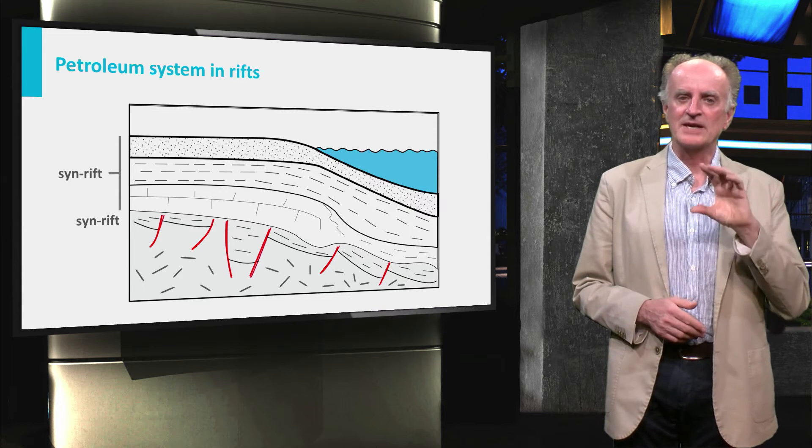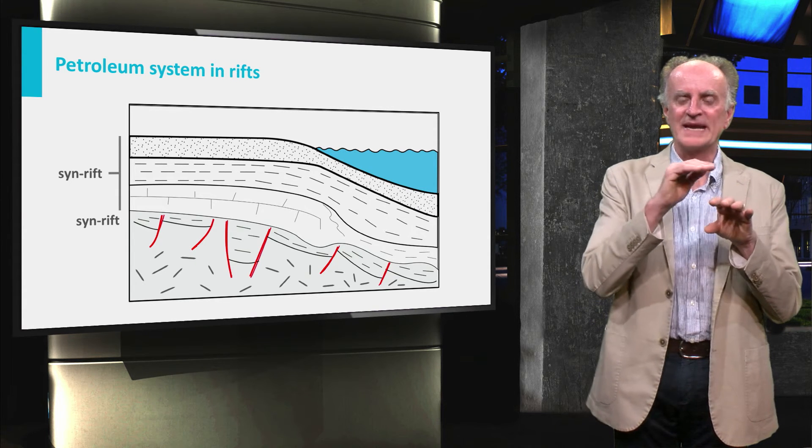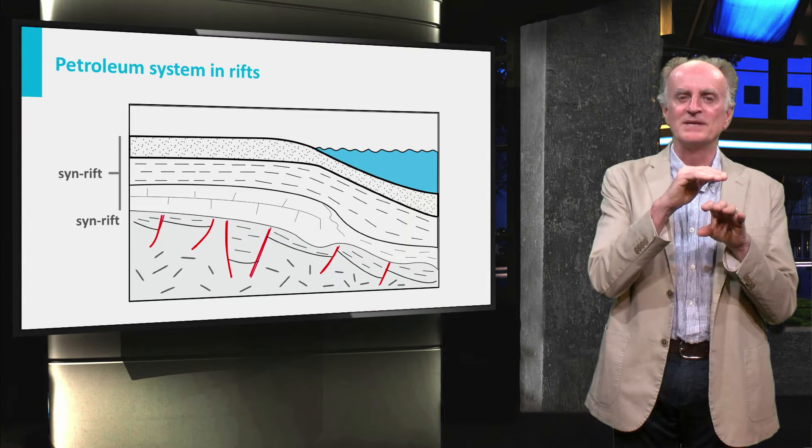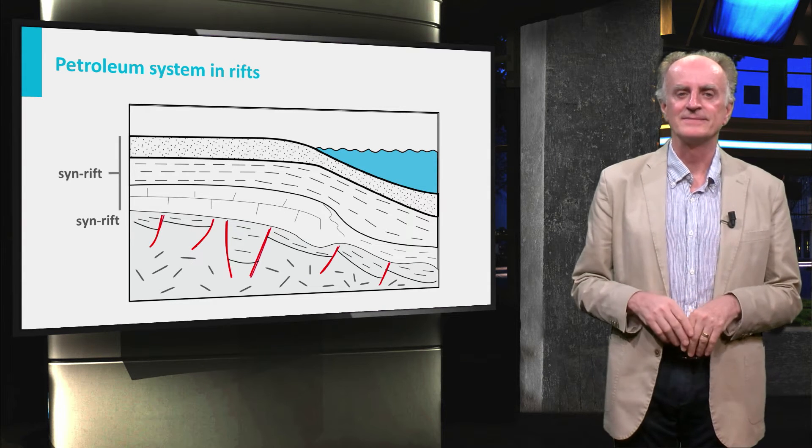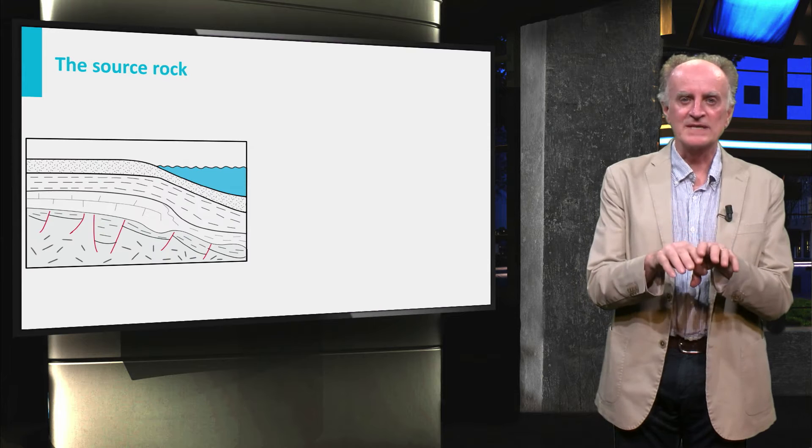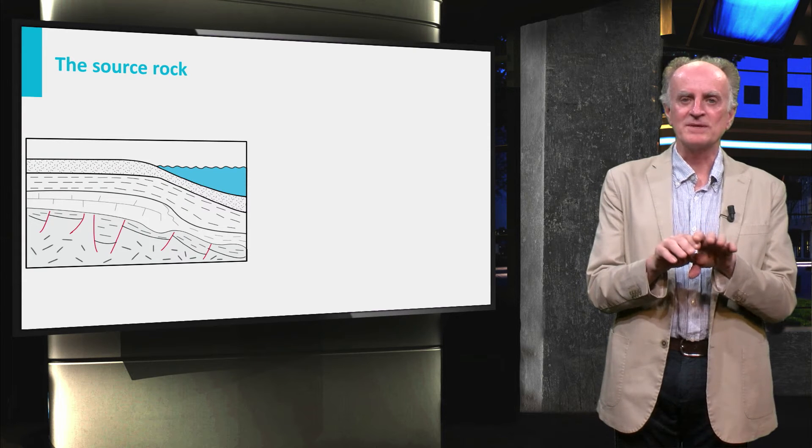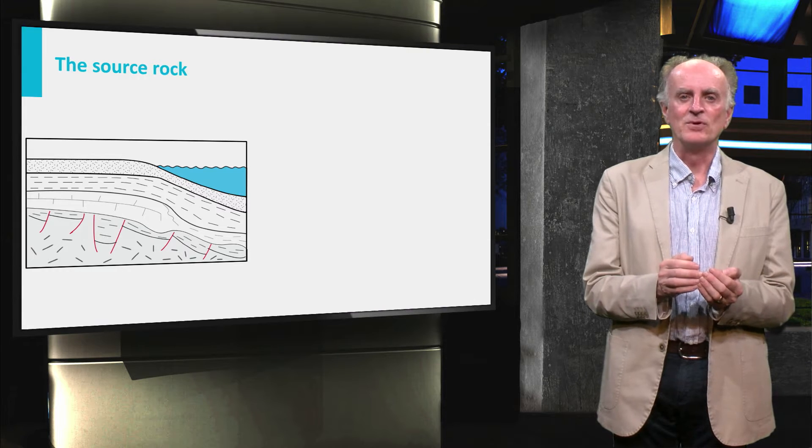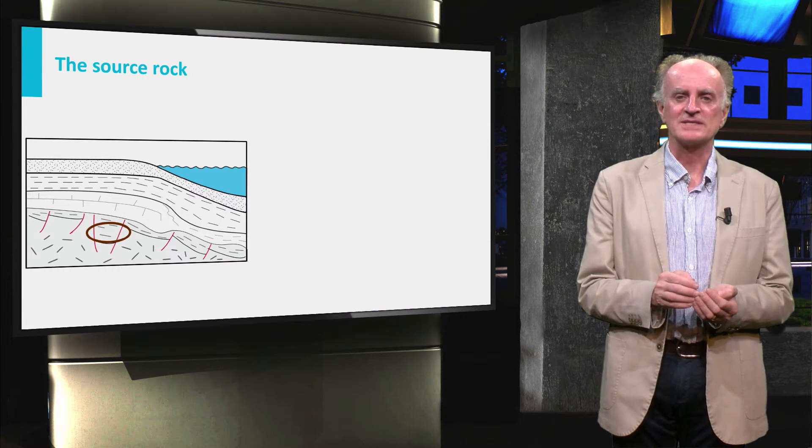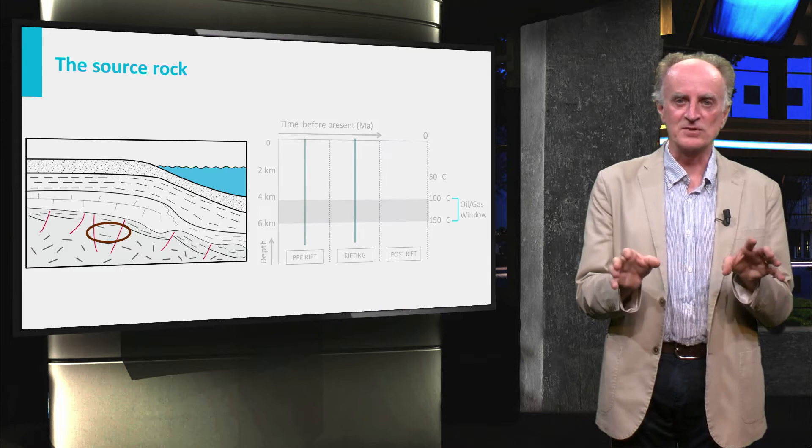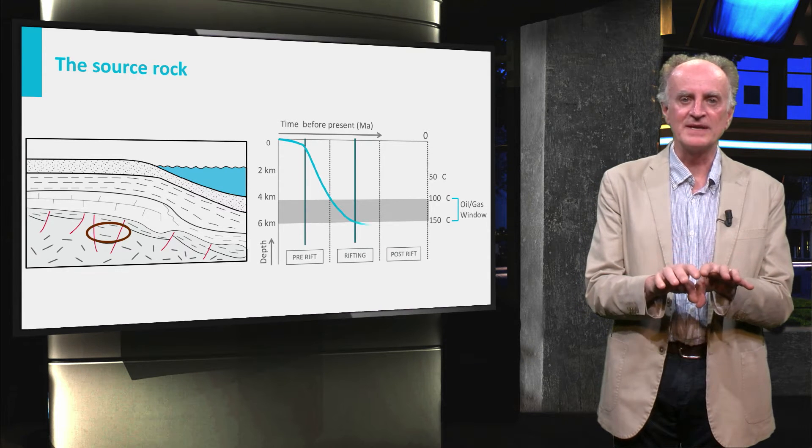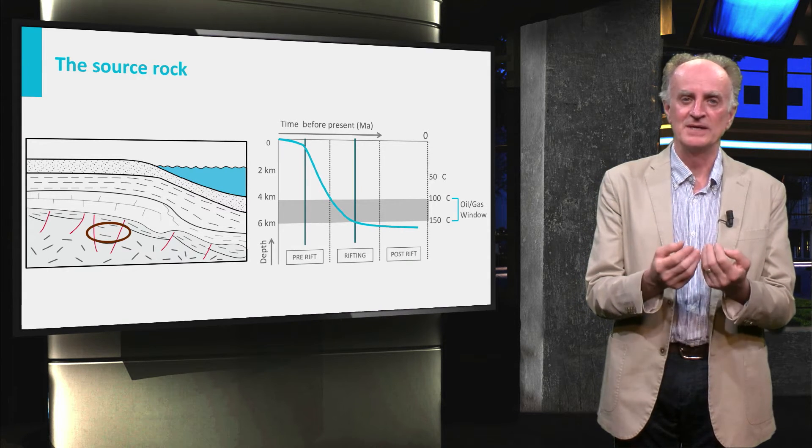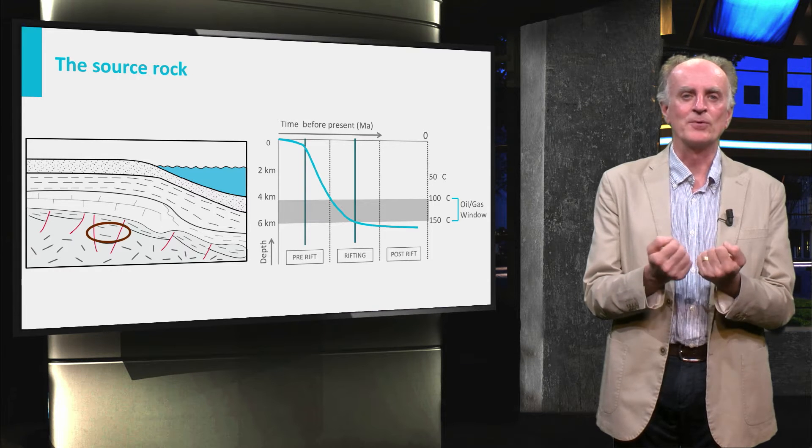In the post-rift you can see a carbonate succession overlaid by siliciclastic with a combination of silts and sand. The source rocks are generally represented by lacustrine or shallow marine deposits sedimented in the small and isolated grabens which developed during the initial stages of rifting. These rocks subside during the following rifting and start producing hydrocarbons when they reach the oil and or gas windows.